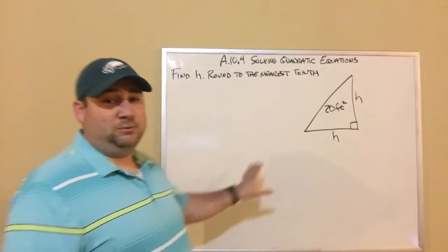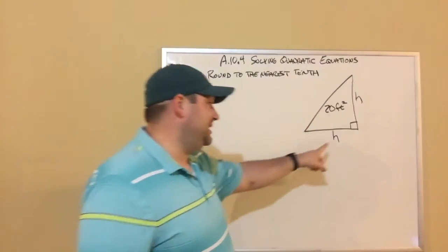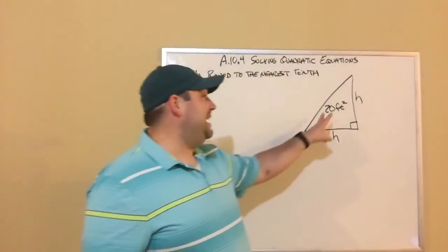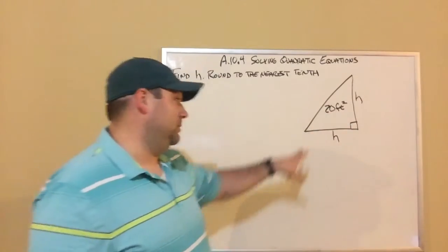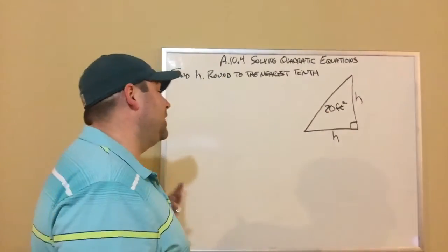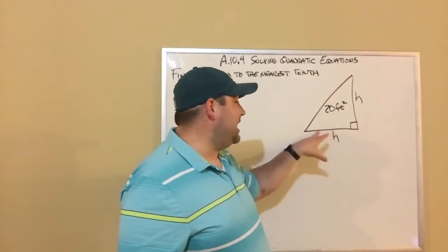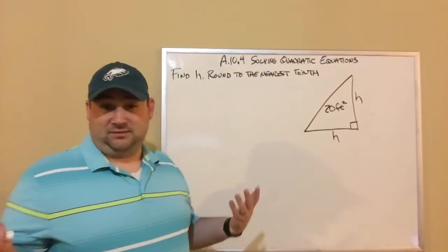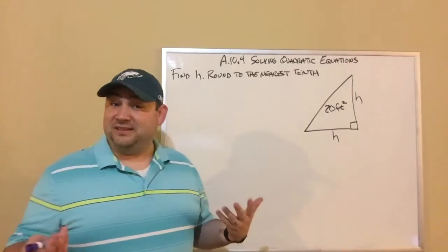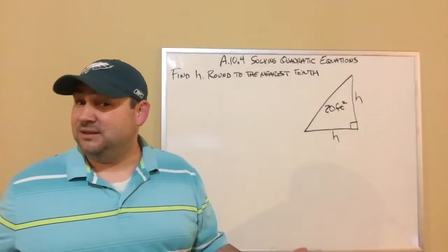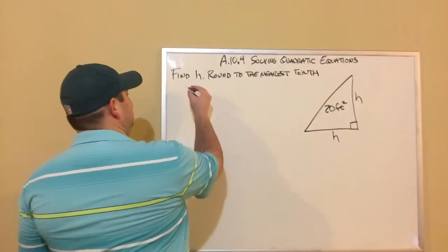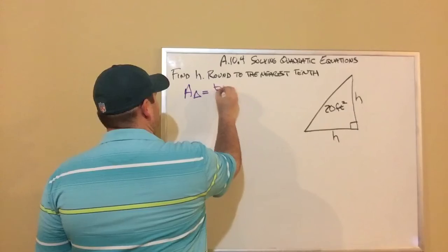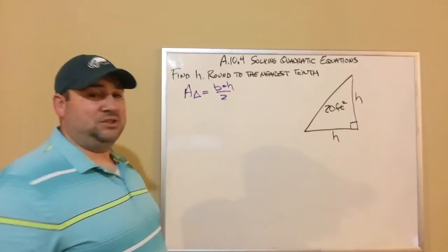So we can see we've got a triangle here. We can see it's a right triangle because of that little right angle there and we know it's got an area of 20 feet squared. We were told that it was given to us in the problem and we're asked to find H. So we can see both sides of this triangle are H. So there's some information you need to know. You need to know how to find the area of a triangle. Does anybody remember how to find the area of a triangle? It's base times height divided by 2. Area of a triangle equals base times height divided by 2.